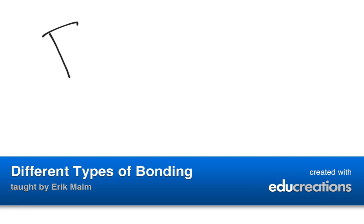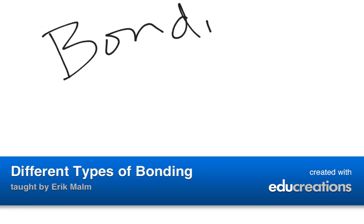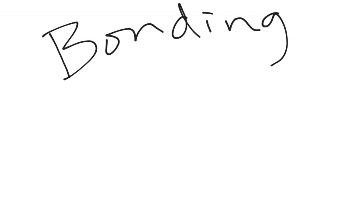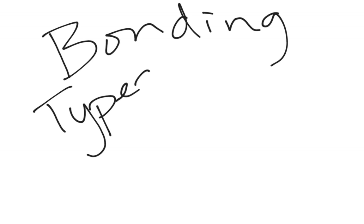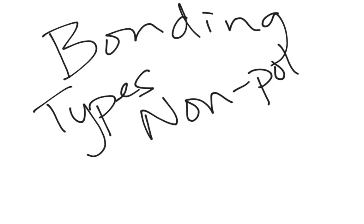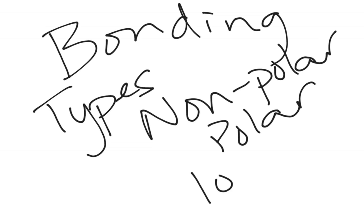Today we are talking about bonding, and specifically the types of bonding: non-polar, polar, ionic, and metallic.